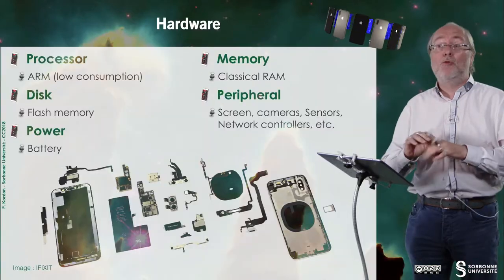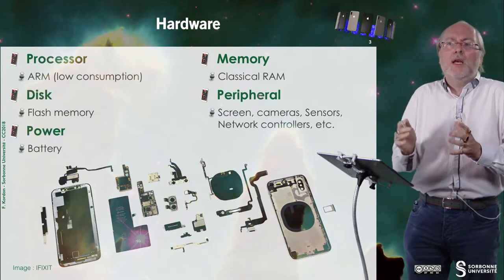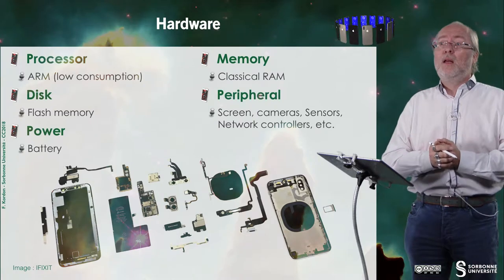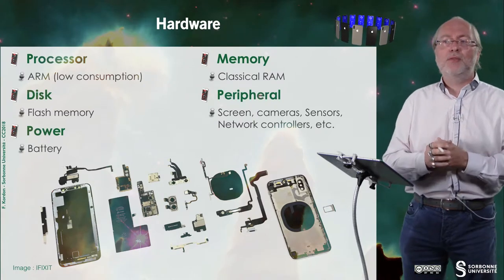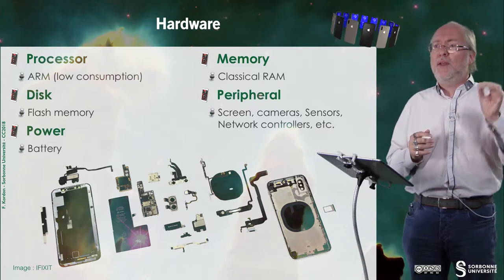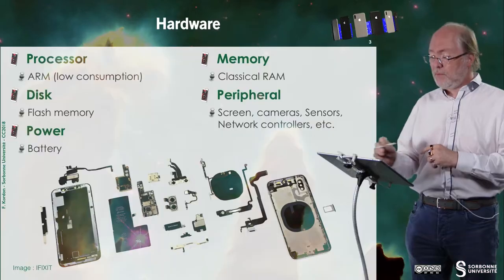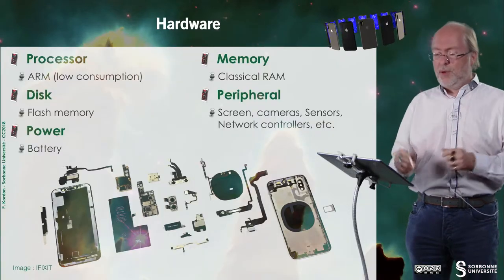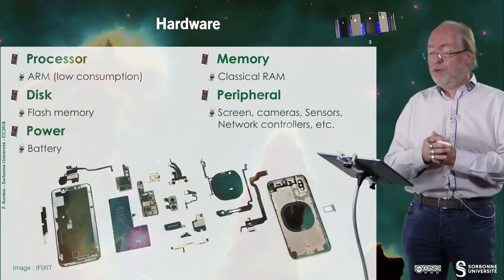Memory — it's classical ROM, but of course you have less. It's very easy to buy a desktop computer with several hundred gigabytes. Here you only have a few gigabytes, which is enormous. You have to realize that some satellites — for example the Pioneer 10 spacecraft — there were only a few kilobytes of memory. And you have peripherals — for example a screen. You have several network controllers because you have the one for Wi-Fi and the one for phones, for 3G, 4G, etc. And a lot of other peripherals that will be presented later.